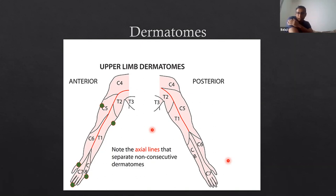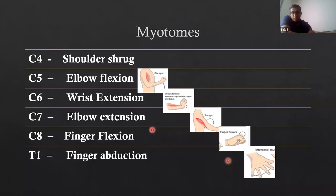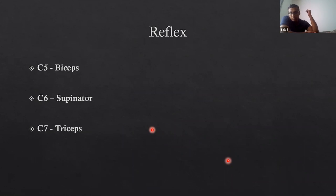For upper limb reflexes: C5 is the biceps reflex, C6 is the supinator reflex, and C7 is the triceps reflex. For lower limb sensation, test L1 at the inguinal area, L2 at the medial thigh, L3 at the medial knee, L4 at the medial malleolus, L5 at the first web space, and S1 at the outer border of the foot. The knee reflex tests L3/L4, the ankle reflex tests L5/S1.